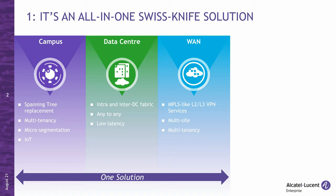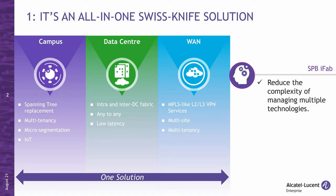Instead of having three different solutions — such as spanning tree in the campus, VXLAN overlays in the data center, and MPLS in the WAN — you can do all three with one protocol. And this reduces the complexity of managing multiple technologies.